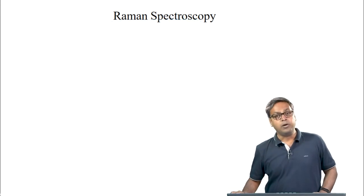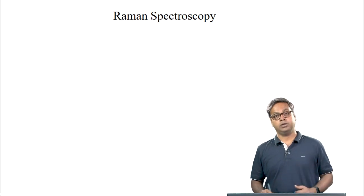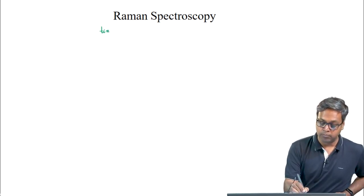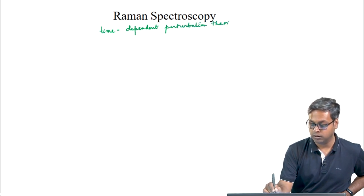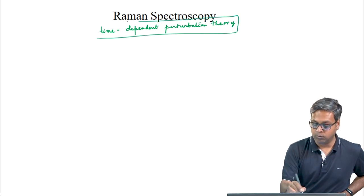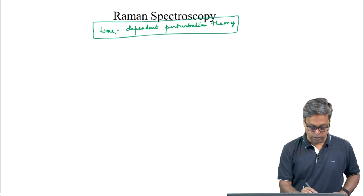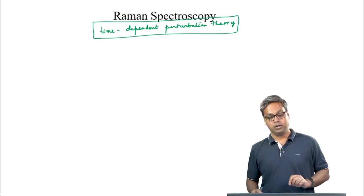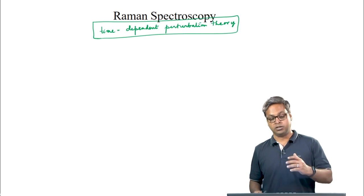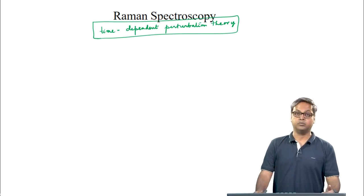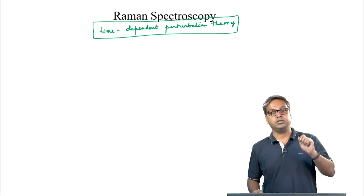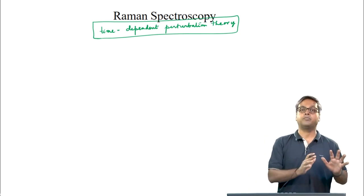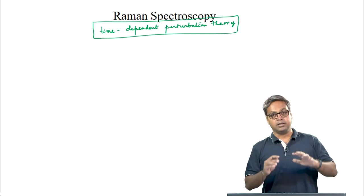The Raman effect can also be described by the time-dependent perturbation theory. My co-instructor Anirban Hasra has already talked about time-dependent perturbation theory in one of the lectures during the first module. In the Raman effect, we have to consider up to the second-order perturbation. Physically, the situation is as follows: from the initial state it goes to a virtual or intermediate state, and from this virtual or intermediate state it goes to the final state. While the initial and final states are stationary, the transition occurs via a virtual state which is non-stationary.